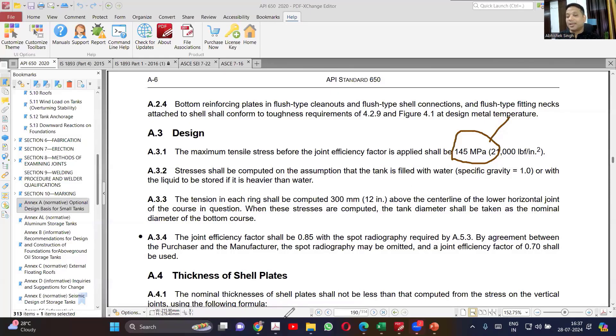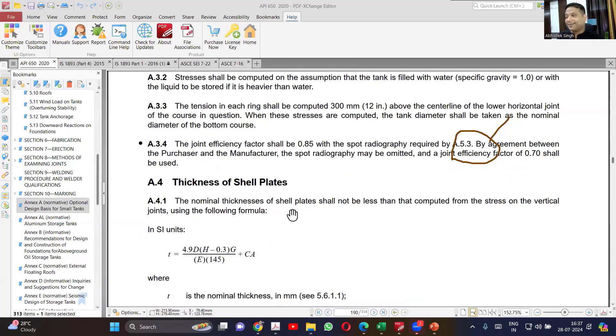So allowable is fixed. Even the joint factor. Now see, till now in the code there was no joint efficiency, right? Whatever calculation we did, have we considered joint efficiency for the tanks? No.